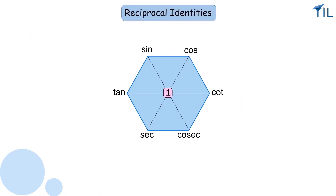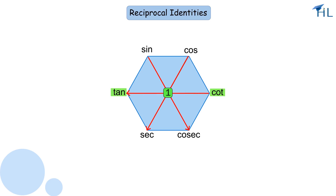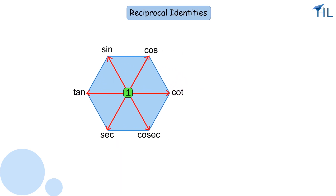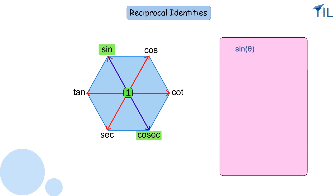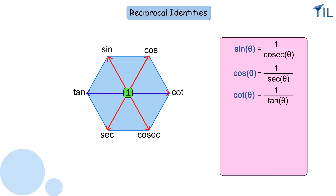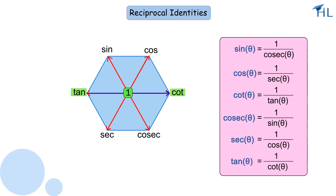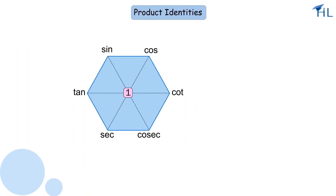We can also get the reciprocal identities by going through the one. For this, let us draw arrows connecting each function with its reciprocal counterpart — draw arrows from sin to cosec, cos to sec, cot to tan, and vice versa. These arrows represent the reciprocal identities. For example, the arrow from sin to cosec reminds us that sin θ = 1 / cosec θ, cos θ = 1 / sec θ, and cot θ = 1 / tan θ.